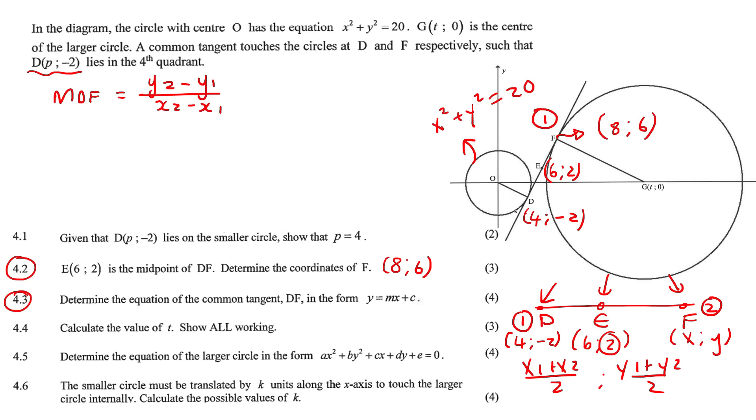So you could, for example, use this as point 1, this is point 2, doesn't really matter. Minus 2 minus 6 over 4 take away 8. And if we simplify that, that should give us 4 minus 8, it should give us 2. Okay, so we know the gradient of that line now.